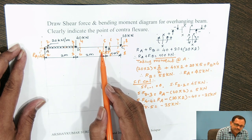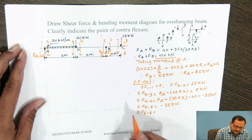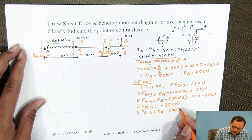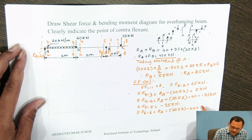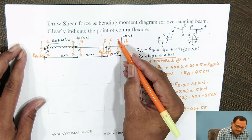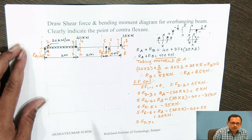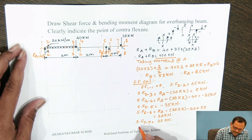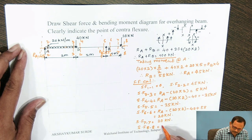Shear force at 6-6, referring left side: R_A positive minus 20 into 2 minus 40 plus reaction R_B upward (positive) plus 55 gives shear force at 6-6 equal to 20 kN. Between B and C there is no load, so shear force remains constant, and shear force at 7-7 is also 20 kN. At section 8-8, there is no load to the right side, so shear force equals 0.